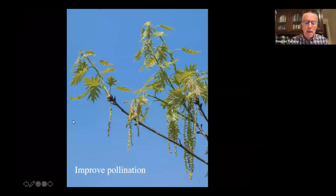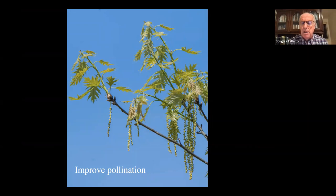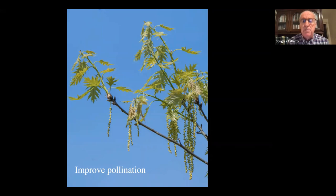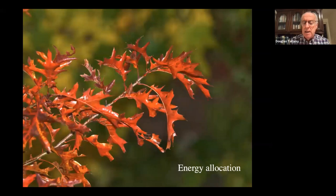Improved pollination: oaks are wind-pollinated, so pollen from male catkins reaches female flowers by chance. The male flowers of one tree precede the female flowers on that same tree, so pollen has to blow around — and the more pollen blowing at the same time, the better the chance of successful pollination. Finally, energy allocation: oaks either use energy for growth or for acorn production, but rarely both in the same season.